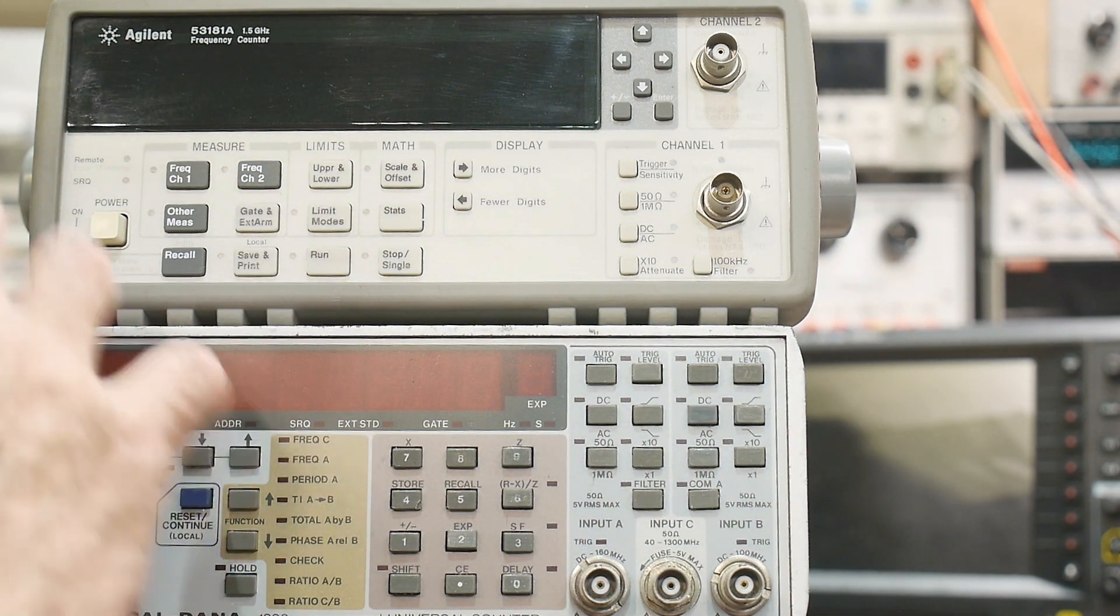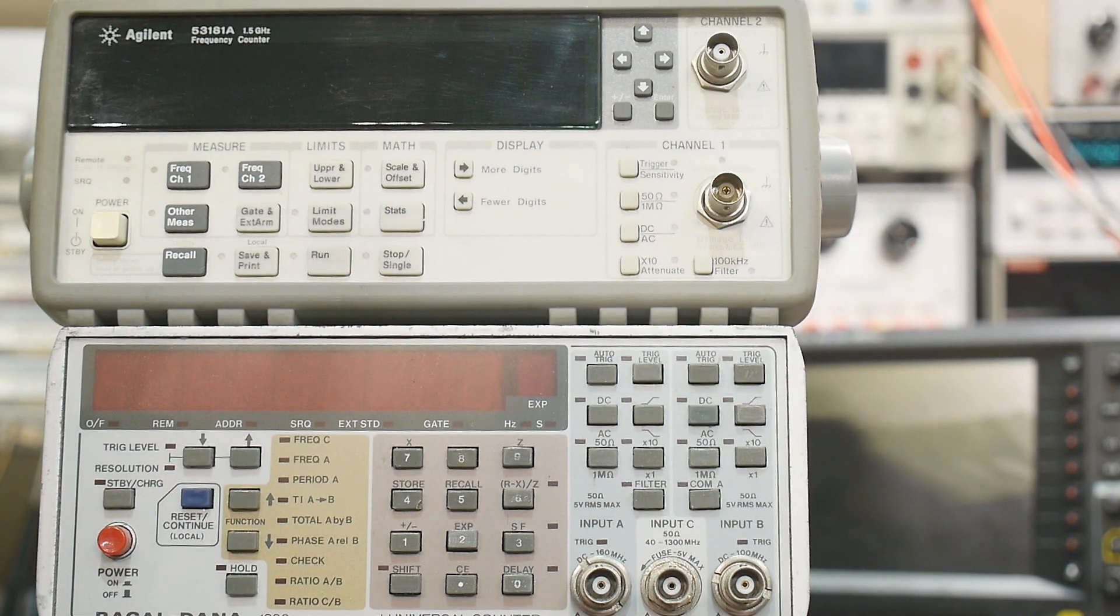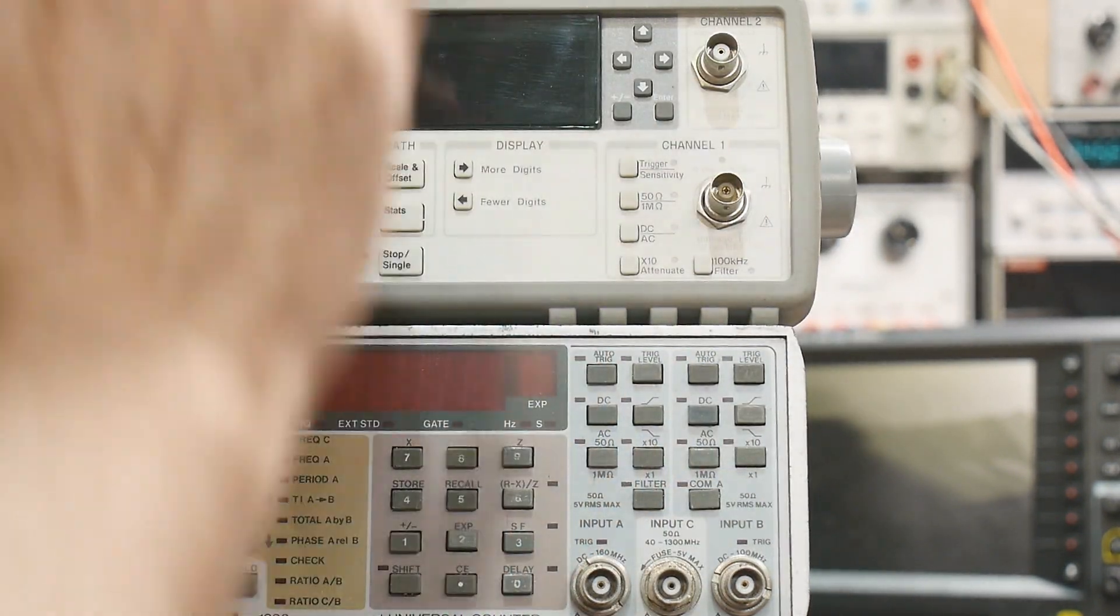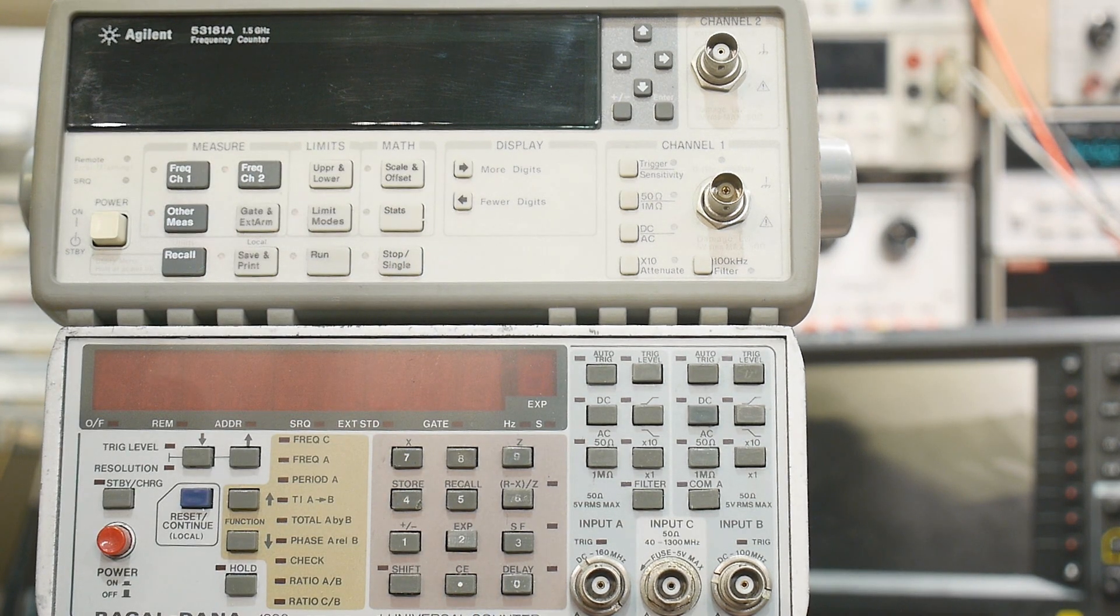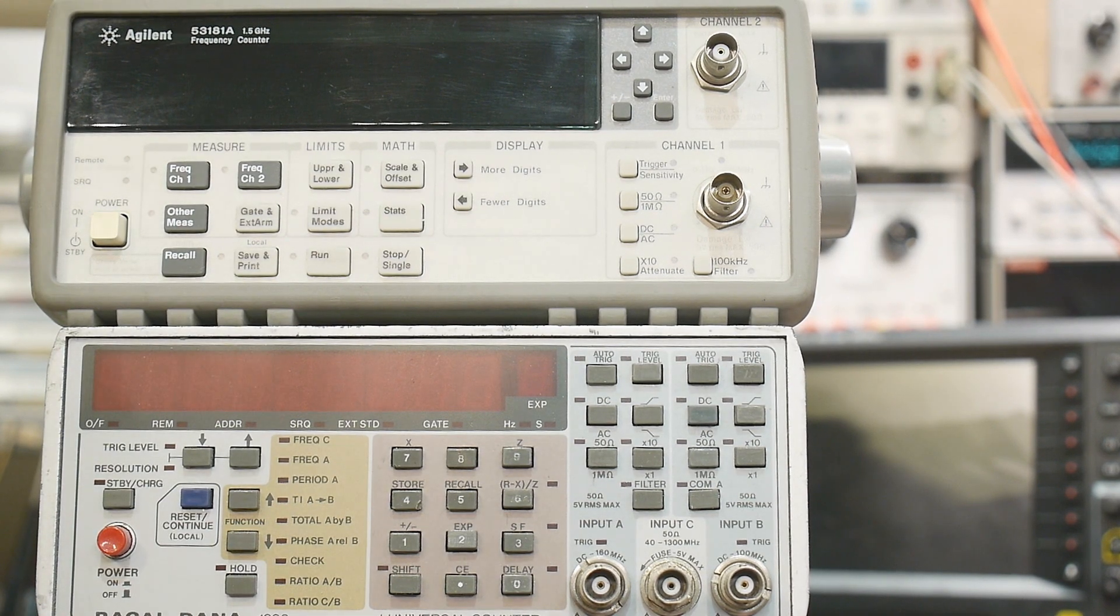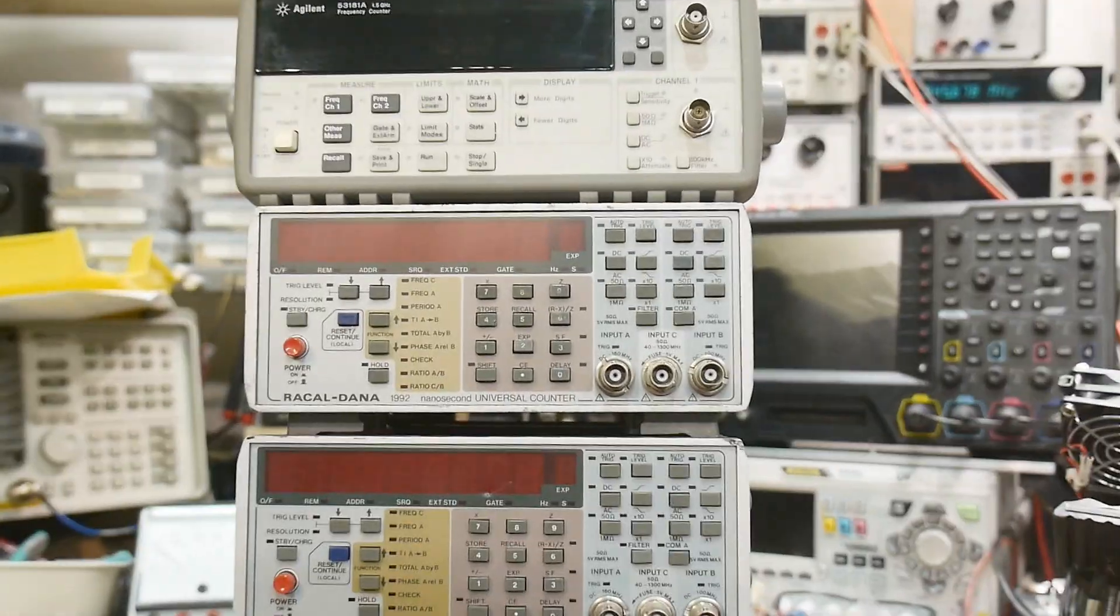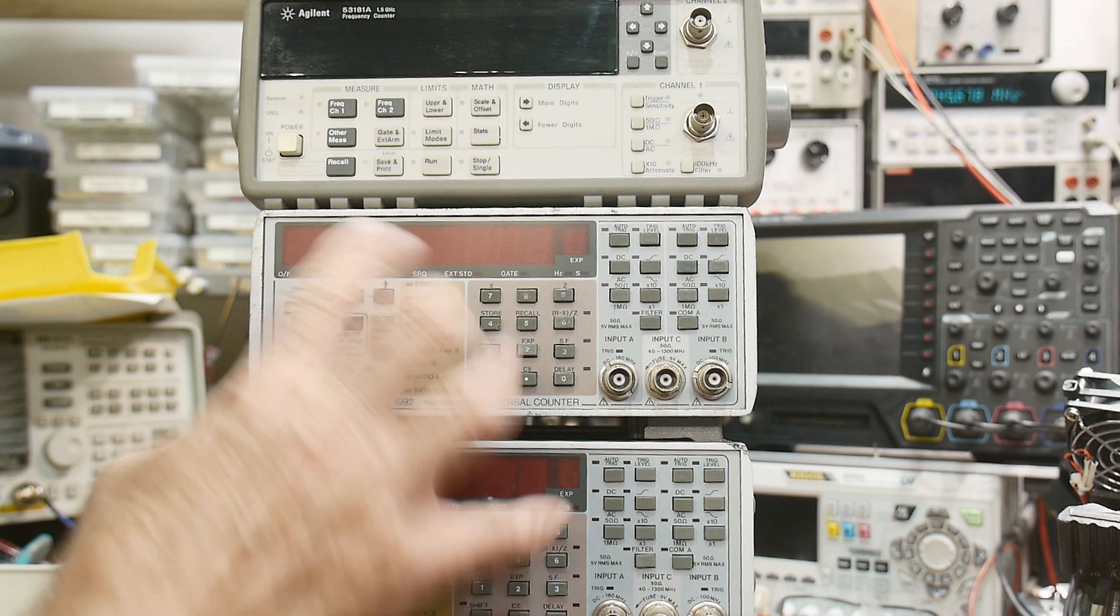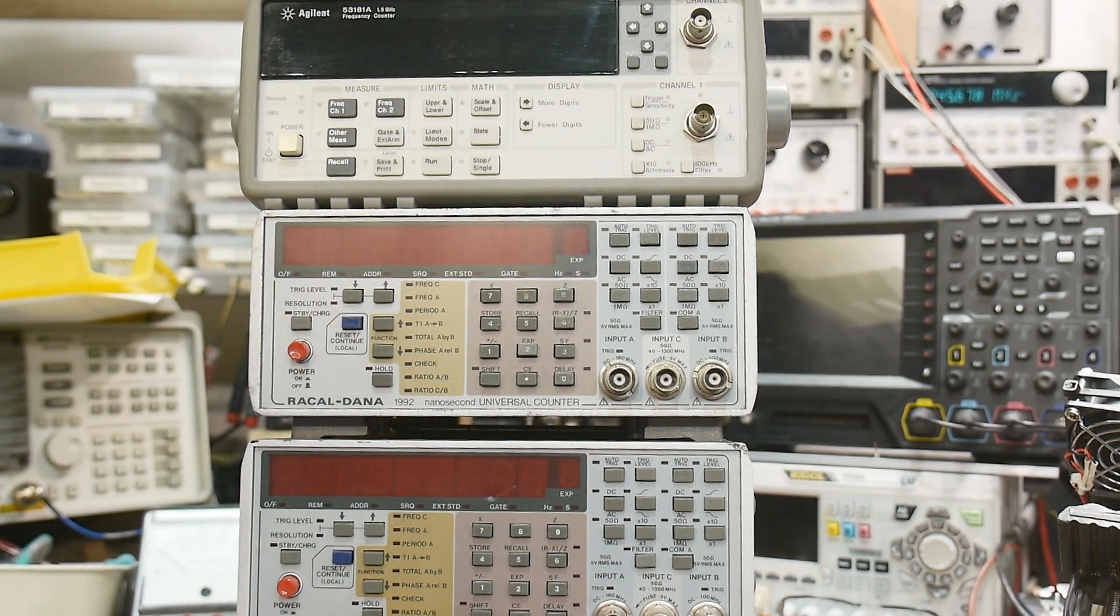You can buy boards to retrofit these things up to 3 gigahertz, up to 6 gigahertz if you are so inclined, but this one is stock and it works perfectly. Obviously this is the very best counter I own now. So what I'm going to do is try to figure out if these two devices act the same, do they have the same jitter in them. I'll compare it against the nice Agilent one.